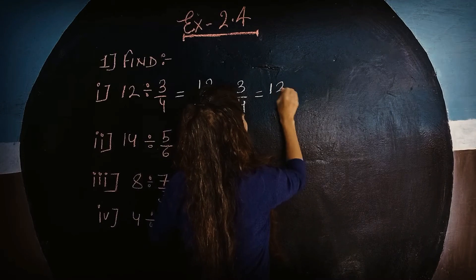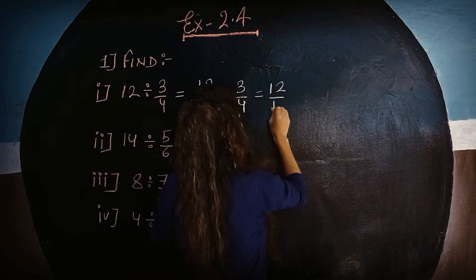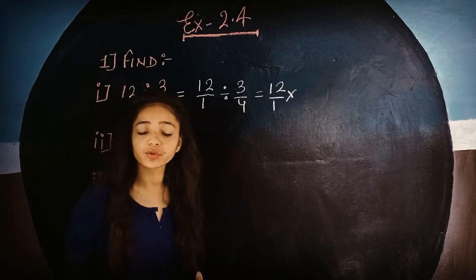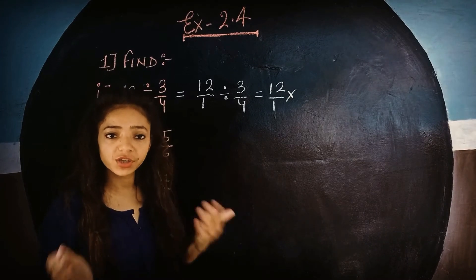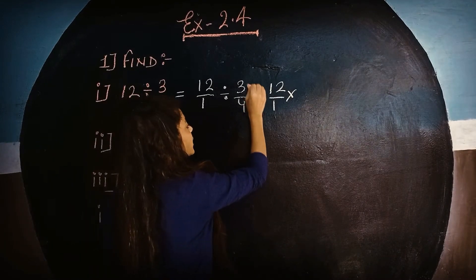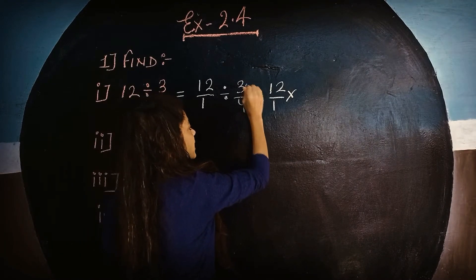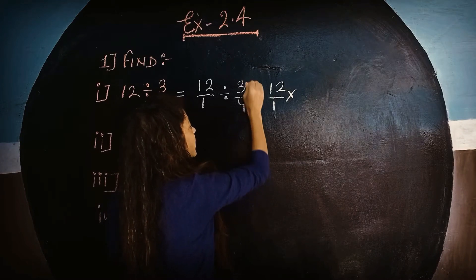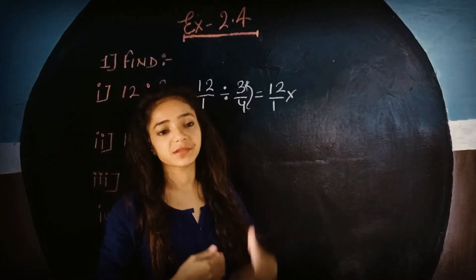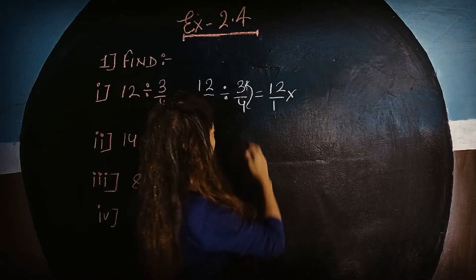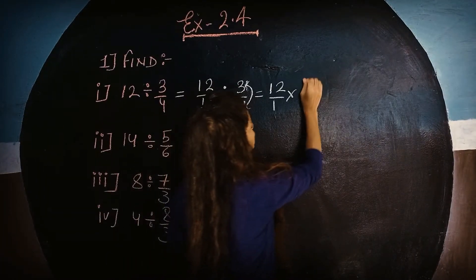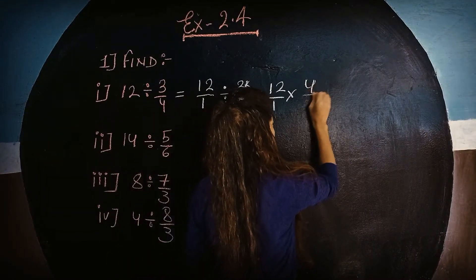This is 12 upon 1. Now we have to change the divide into the multiplier. When we change divide into multiply, this 4 will go to the numerator and 3 will go to the denominator — they exchange places. So 3 upon 4 will become 4 upon 3.